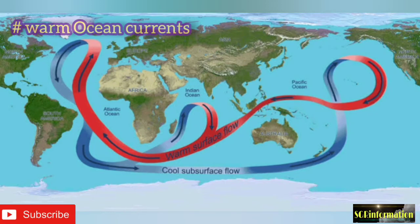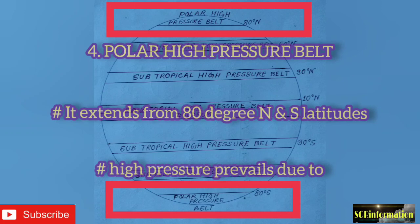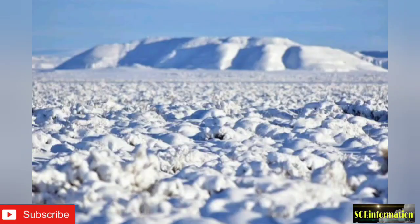Number four: polar high pressure belt. It extends from 80 degrees north and south latitudes. High pressure prevails in this belt due to extremely low temperatures at the poles, which remain below freezing point even during the summer season. The air remains cold and dense, resulting in high pressure conditions in this belt.